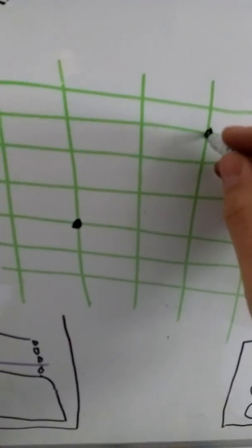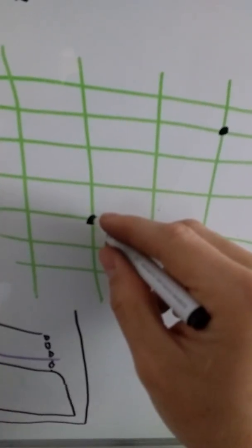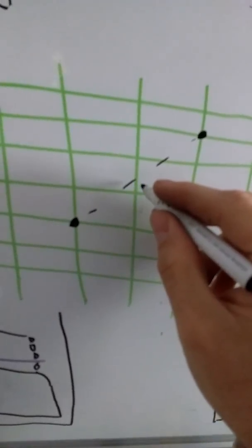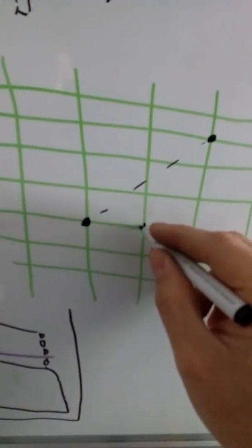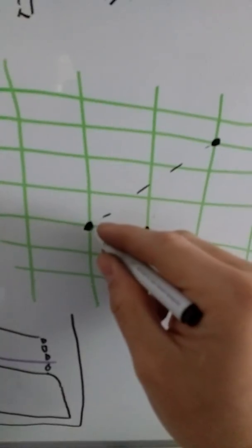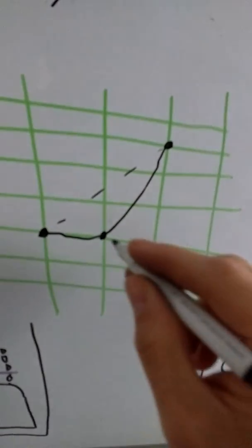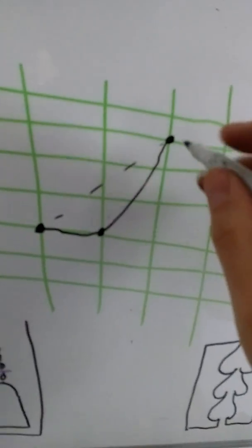Then it'll kind of form a line, and then from there I pick a third point in order to create a curve. So this will be the path of the conduit.